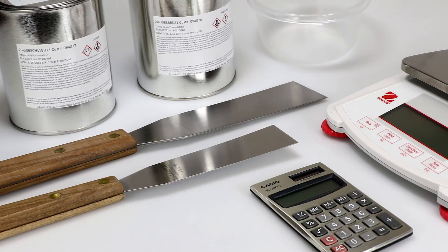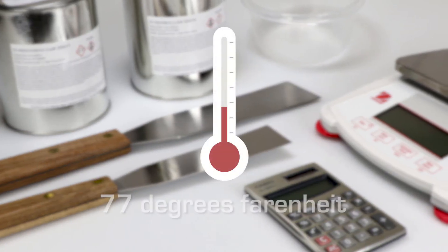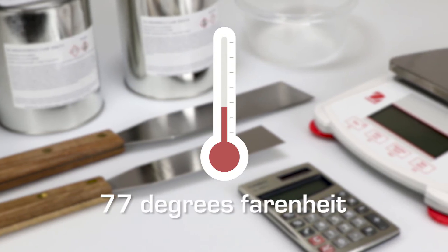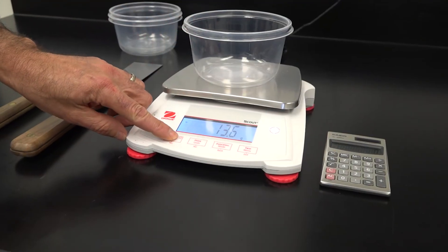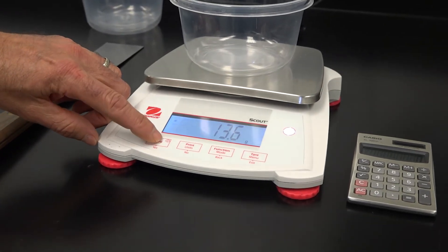Make sure the materials to be mixed are at room temperature or approximately 77 degrees Fahrenheit. Place the mixing container on the scale and make sure the scale reads zero.